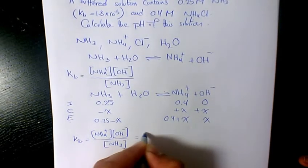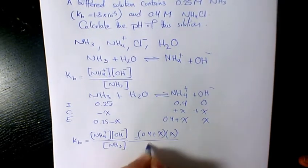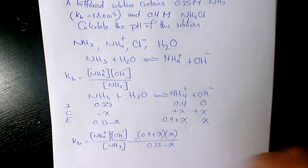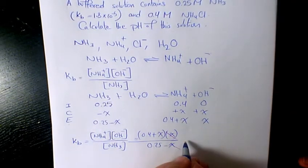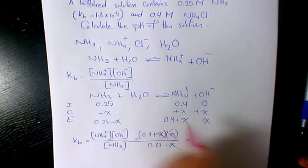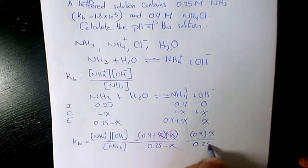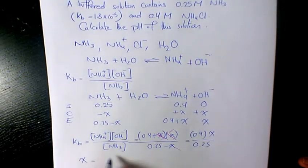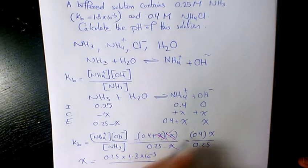So these two cancel out and we will have—actually these two cancel out, this one we still have it—you have 0.4 times X divided by 0.25. So X will be 0.25 times Kb, which is 1.8 times 10 to the power of negative 5, divided by 0.4.